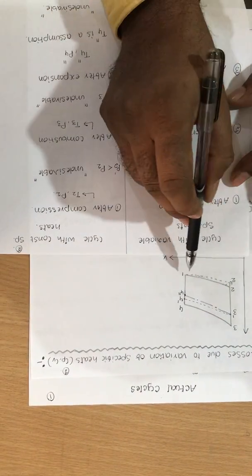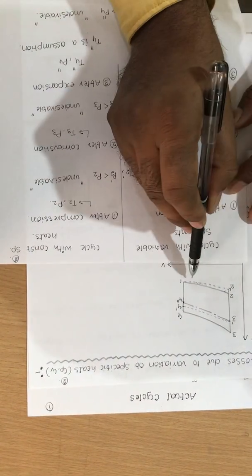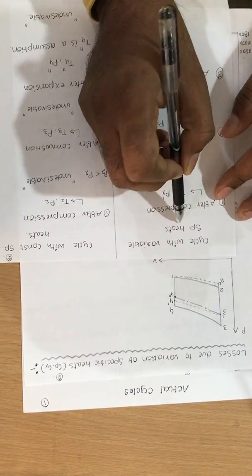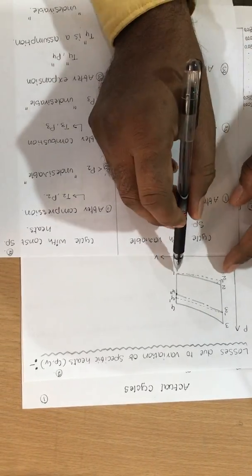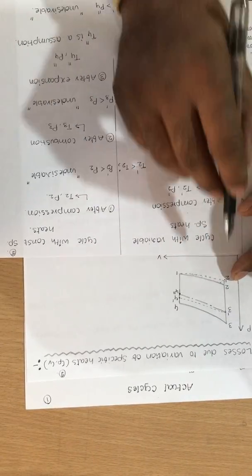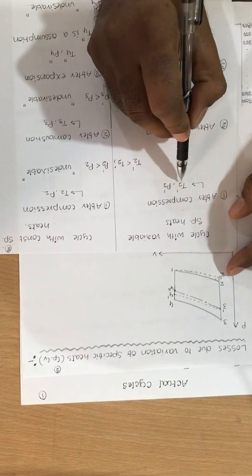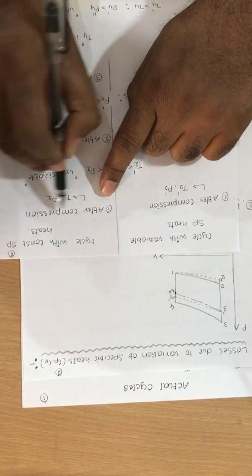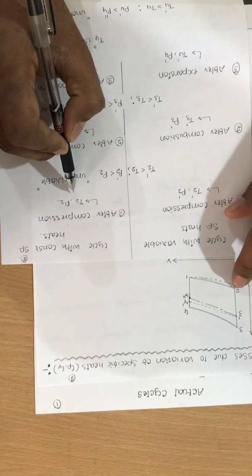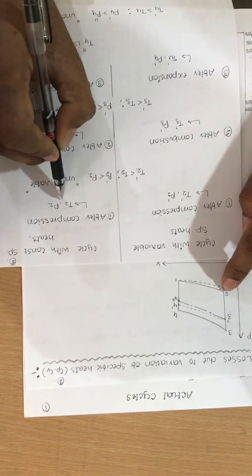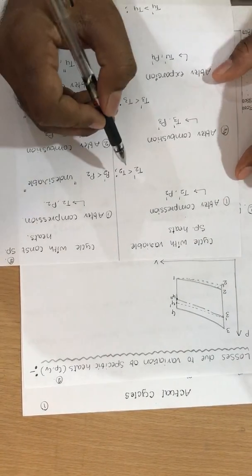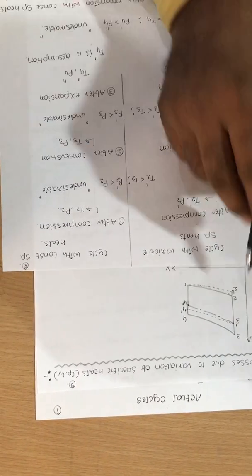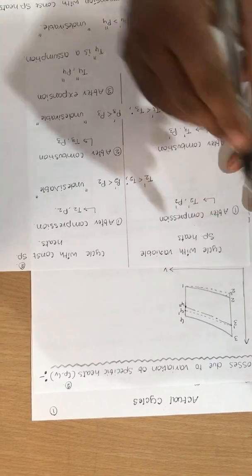First, consider what happens after compression. With variable specific heats, if compression follows with variable specific heats, the temperature at the end of compression is T2' and the pressure is P2'. With constant specific heats, after compression the points reach T2 and P2 respectively. Comparing these two: T2' is less than T2 and P2' is less than P2.